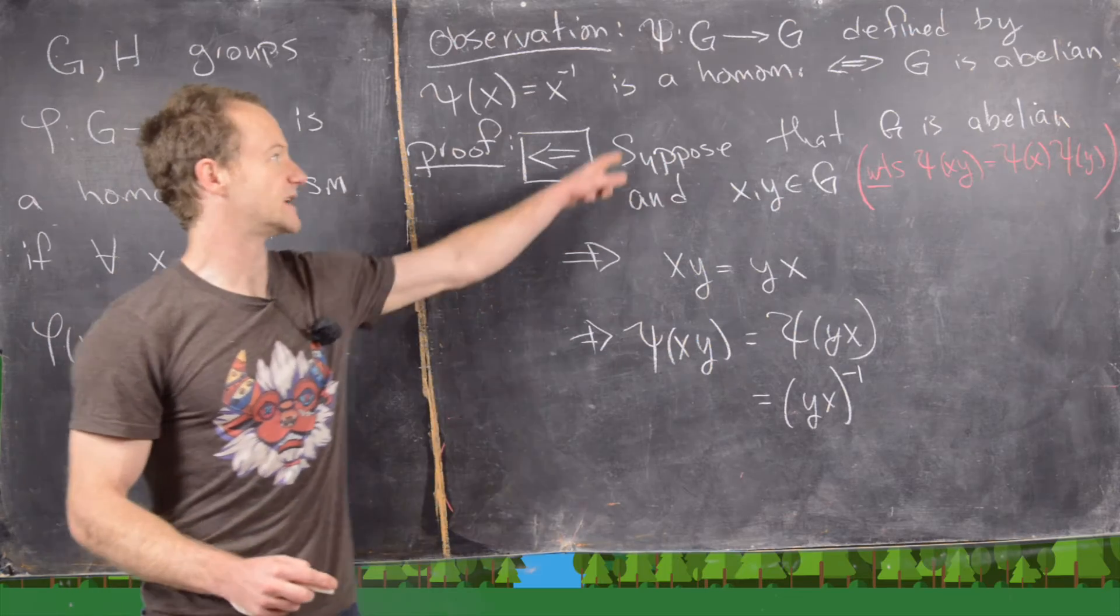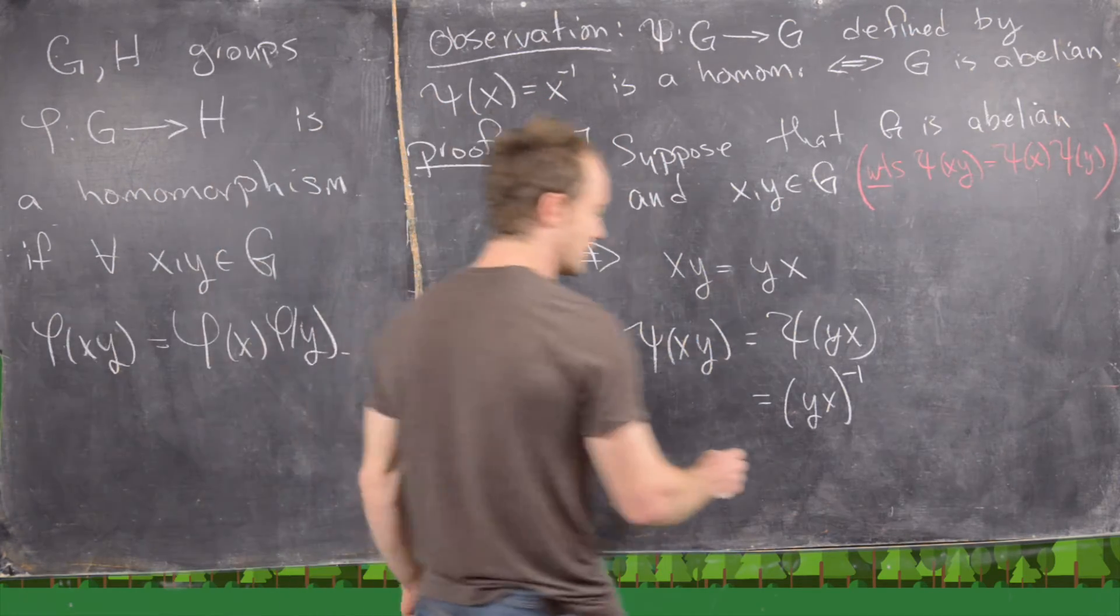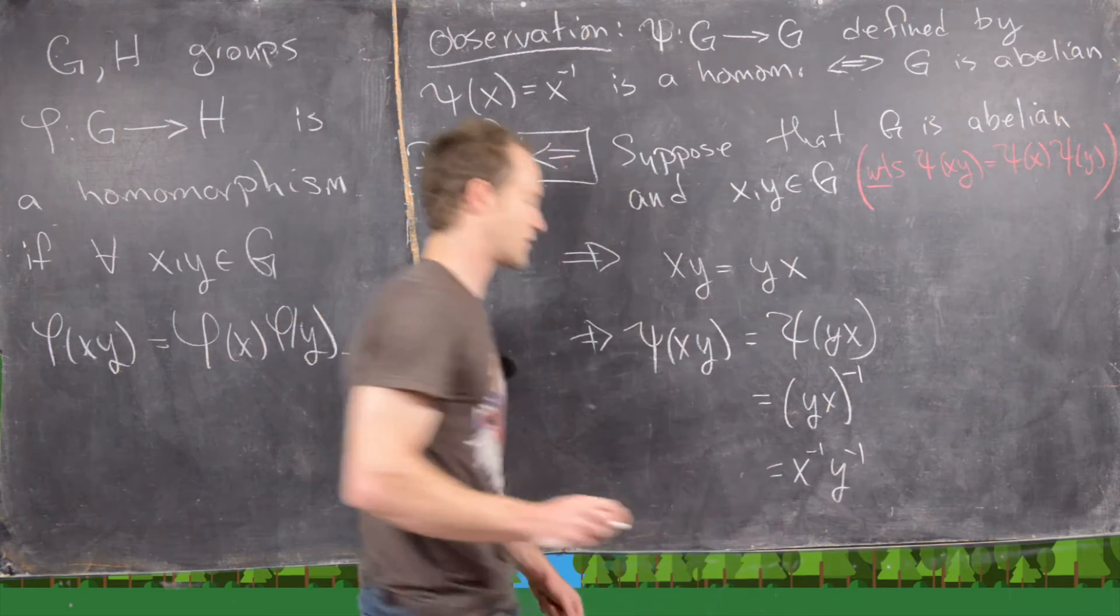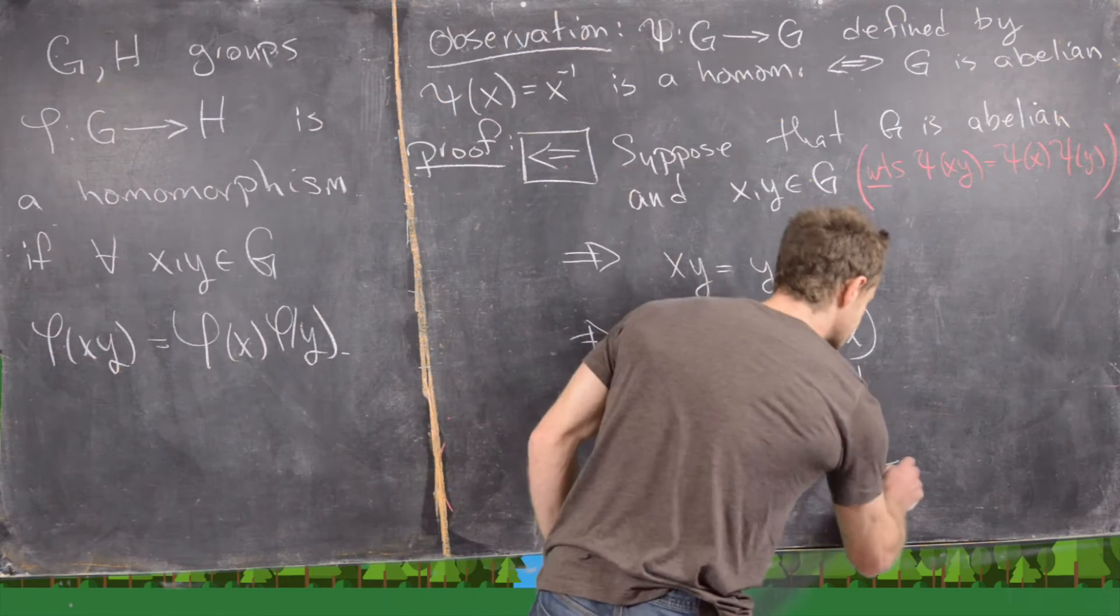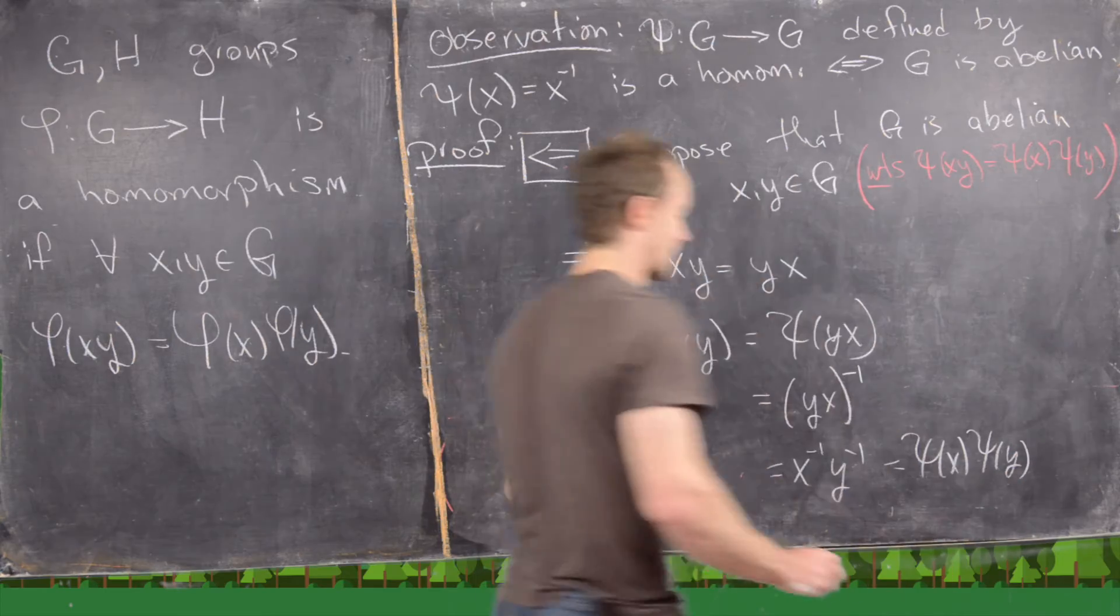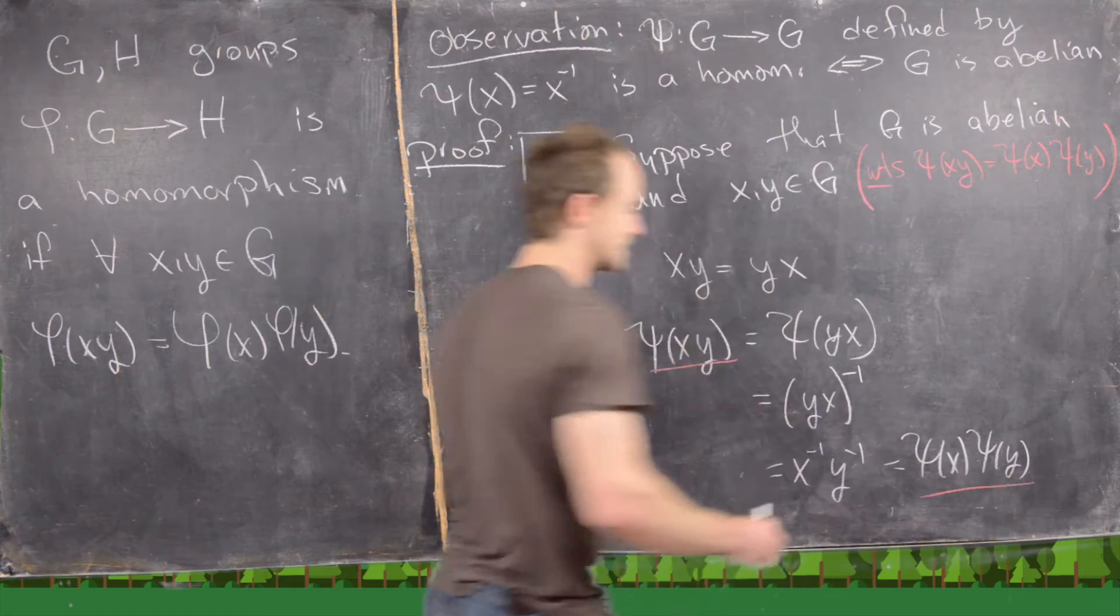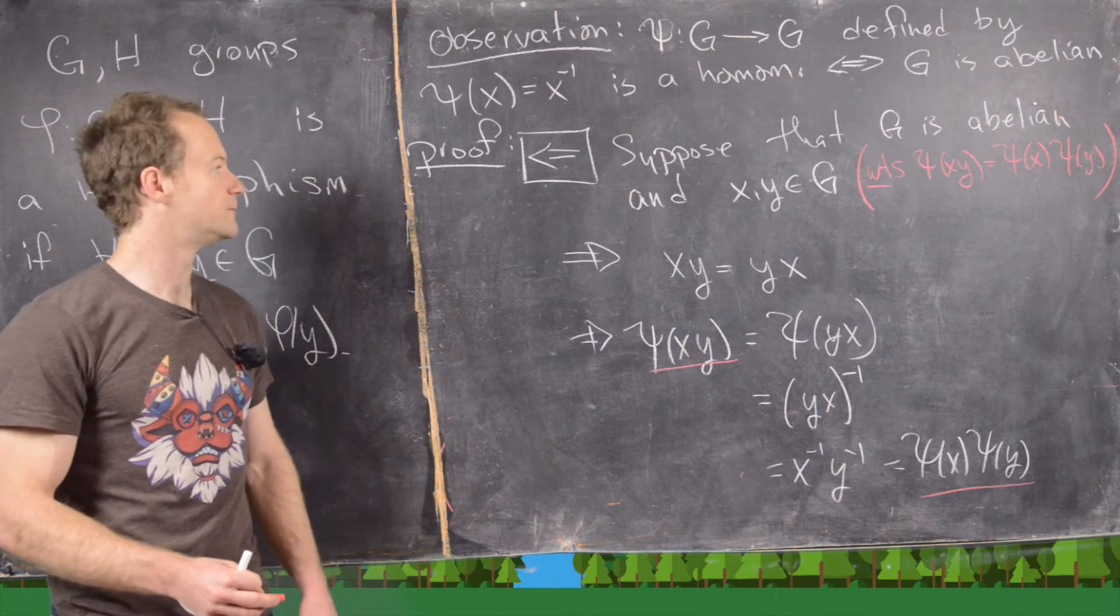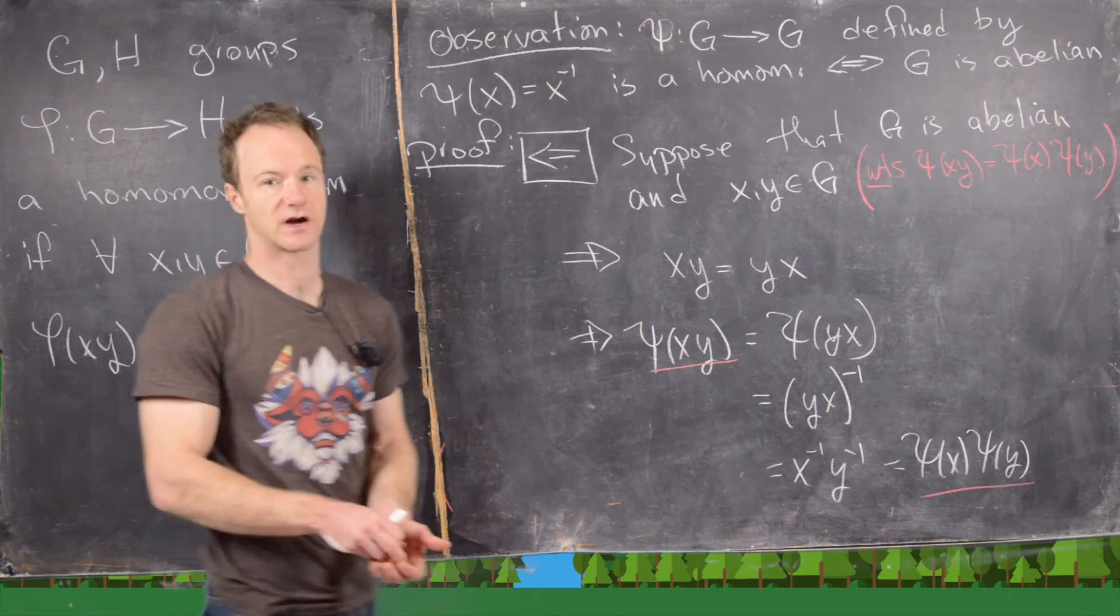Because again, that's how we're defining this thing. But by the shoes and socks theorem, we know that that is equal to x inverse y inverse. We have to reverse the order. But now we see that that is exactly equal to psi of x times psi of y, which if we look at the extreme left and right-hand side of this equation, we've proven exactly what we need for this to be a homomorphism. I'm going to clean up the board, and then we'll prove the reverse direction.